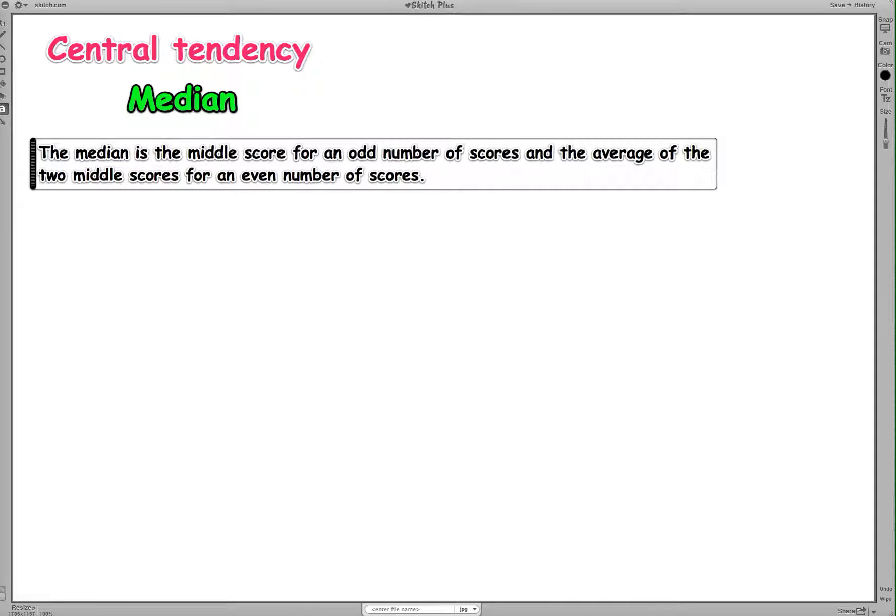So as you've found out through doing the mean practice activities from the last video, having either a disproportionately large or small number in a set of scores either increases or decreases the mean. So this can give a distorted view of the middle or Central Tendency of a set of scores. So in some cases, a better measure of Central Tendency is the median.